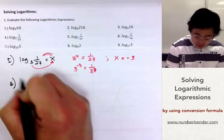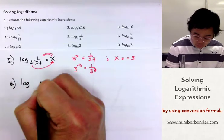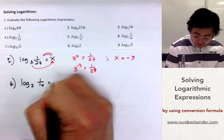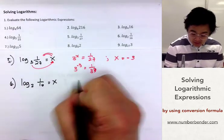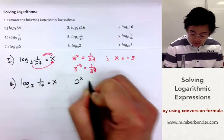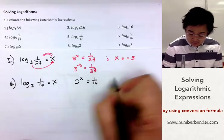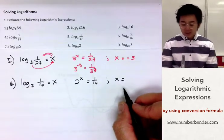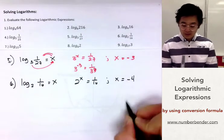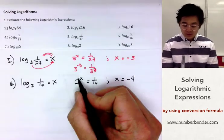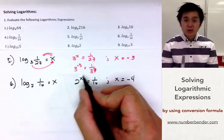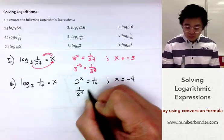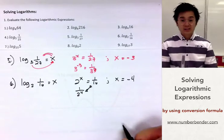For number 6, the last in this set: logarithm of 1 over 16, base 2, equated to x gives us 2 raised to x equal to 1 over 16. The exponent we're looking for is negative 4, because 2 raised to negative 4 becomes 1 over 2 to the 4th, which equals 1 over 16.